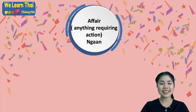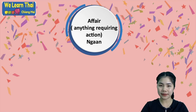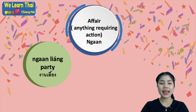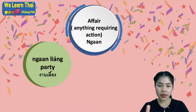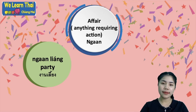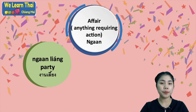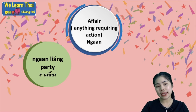And the next, we have the word งาน — this means affair or event. งานเลี้ยง — party. Actually you can say งานเลี้ยง with the Thai word, or you can say party with a Thai accent. We say ปาร์ตี้ — that's okay as well.